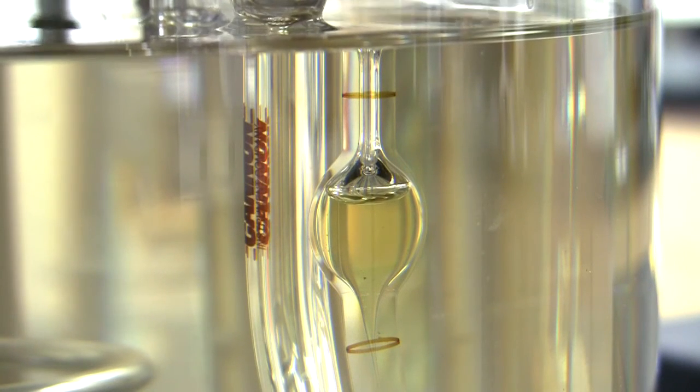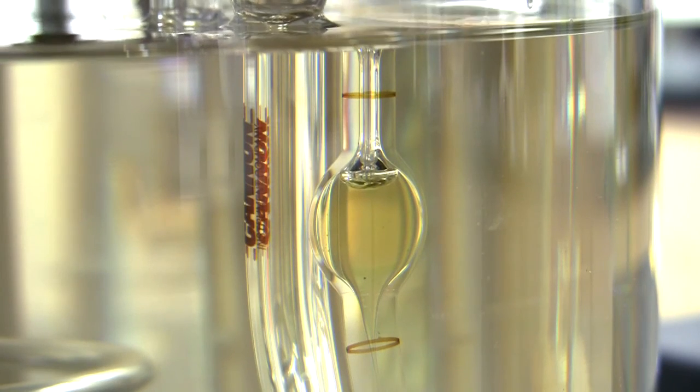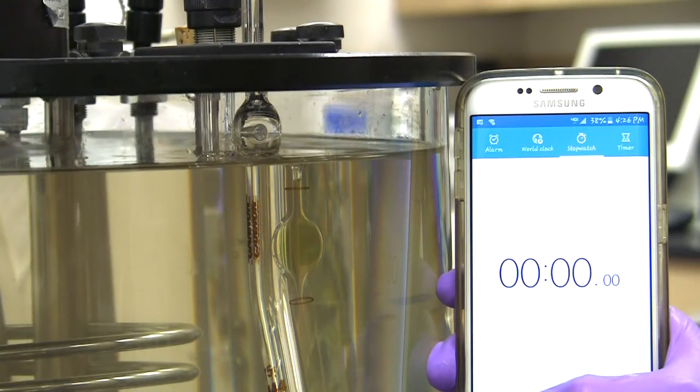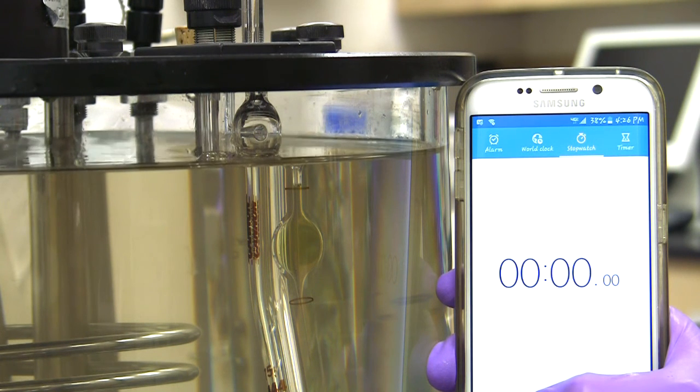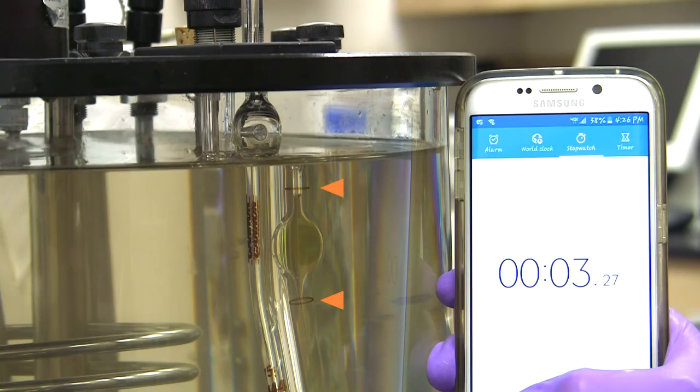Apply suction to the small tube or pressure to the large tube and draw the liquid slightly above the top mark. To measure the efflux time, allow the liquid sample to flow freely down past the second mark, measuring the time for the meniscus to pass between the marks.